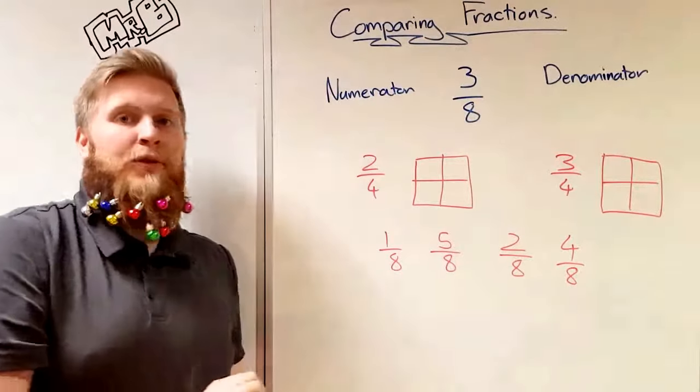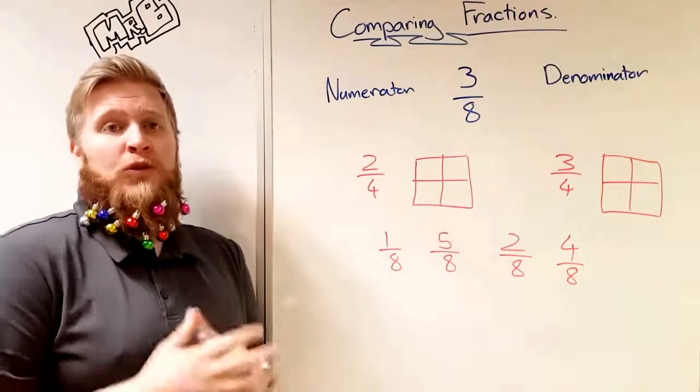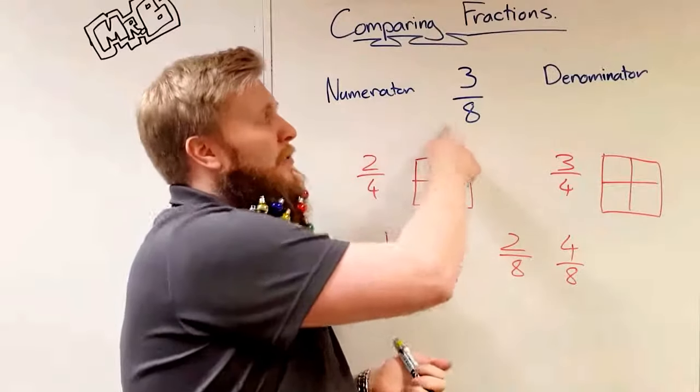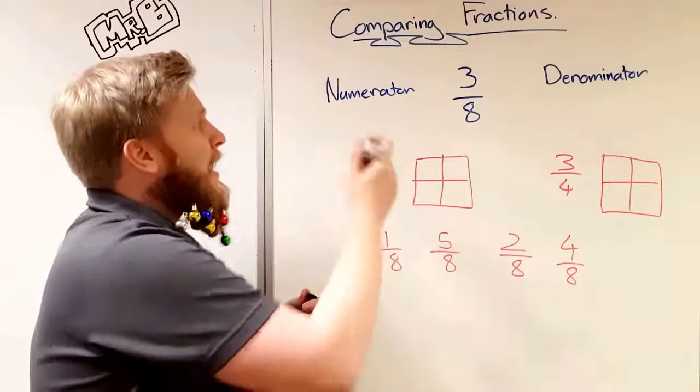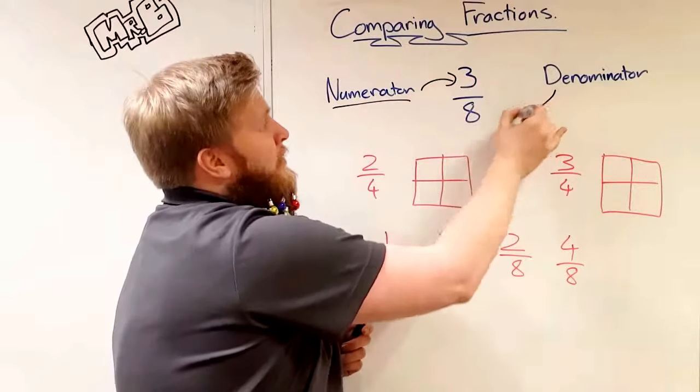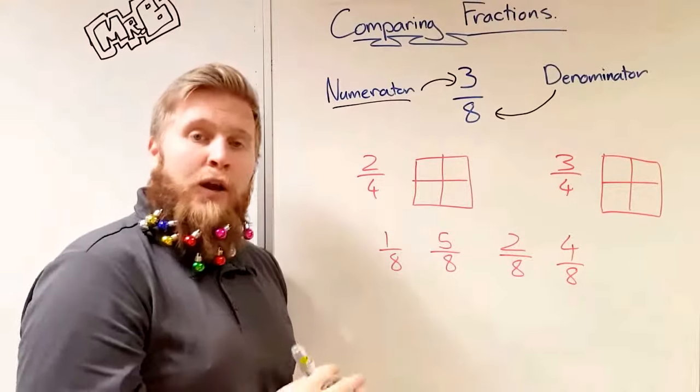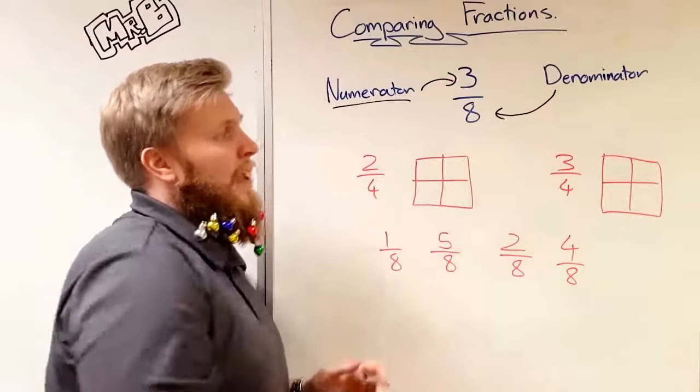Today we're going to compare fractions so we can see which ones are bigger, which ones are smaller, which ones are the same size. Now we've got a fraction here, three-eighths, and we're just going to have a quick recap. Remember, numerator is the number on the top, denominator is the number on the bottom. We're just going over that again quickly because we will be using that later on.